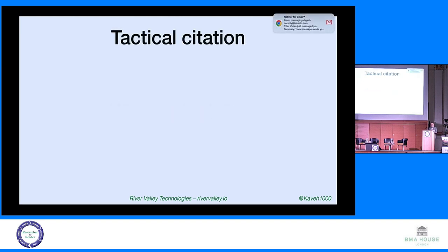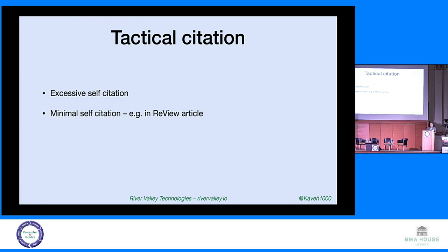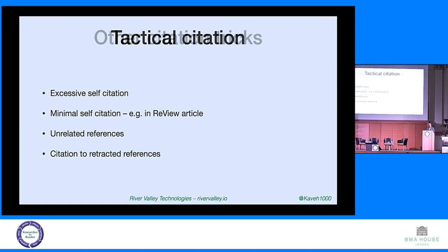What do we look for? There's no single solution — we're working on different areas. Tactical citation: excessive self-citation is wrong if you're trying to boost citations. But minimal self-citation is also a yellow alert — if you're doing a review and there are no citations to yourself, how come you did no work in this area? Unrelated references — clearly not right. Citations to retracted references, especially several of them — that's an alert. All of these are signs a human should look at to question whether something should be published.